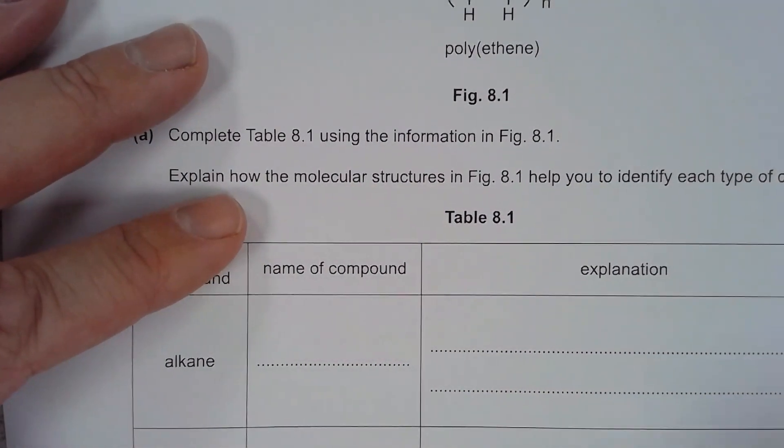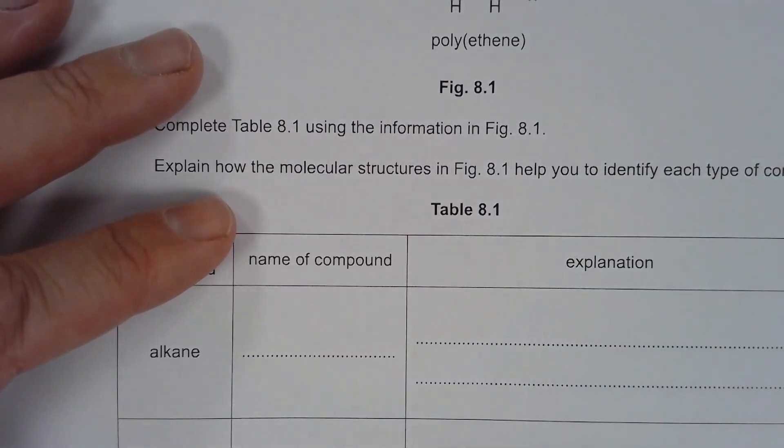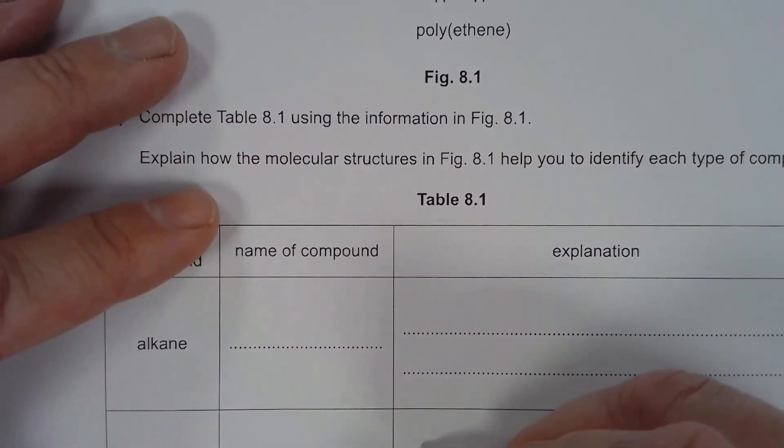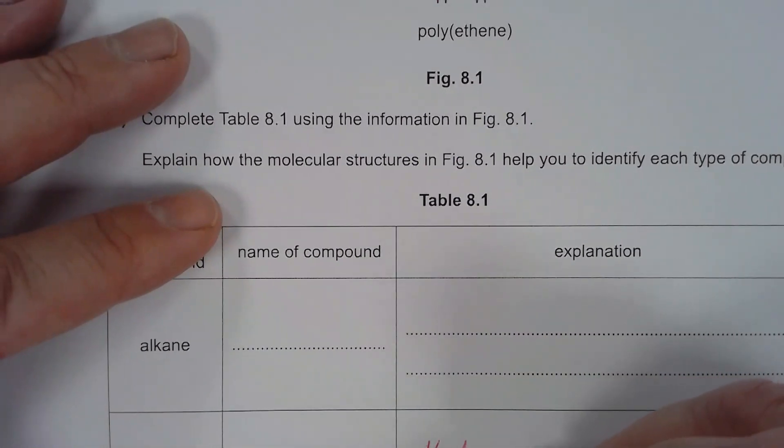So the propene is an alkene because it is a hydrocarbon. It's got only hydrogen and carbon atoms, but it has double bonds.